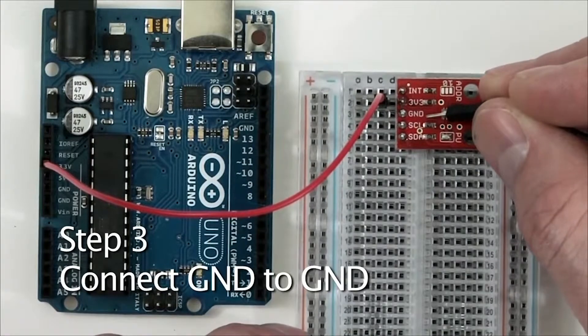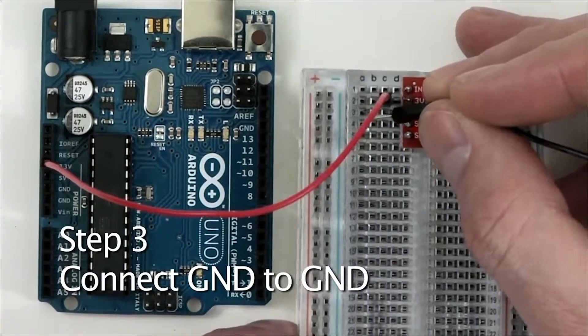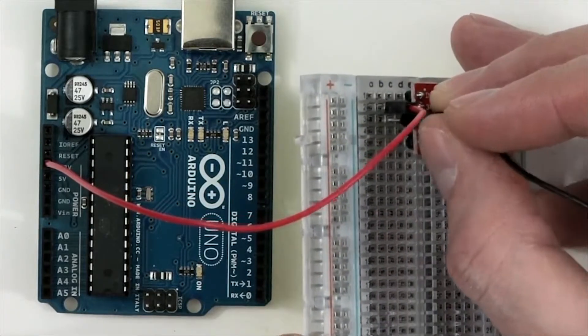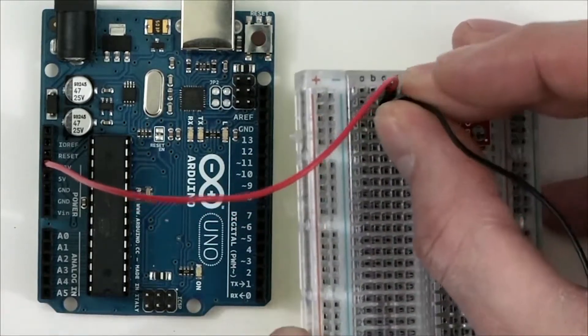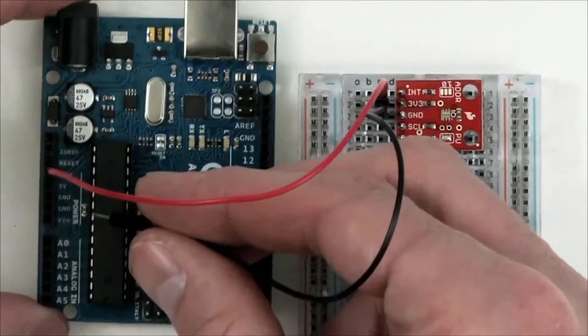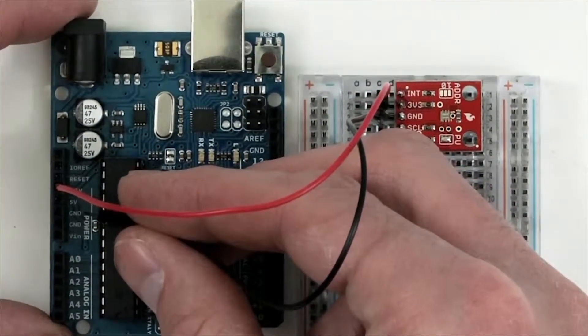Next, take one end of a jumper wire, plug it into row number three which connects to the ground or GND pin. Then take the other end of the jumper wire and plug it into any of the ground pins on the Arduino.